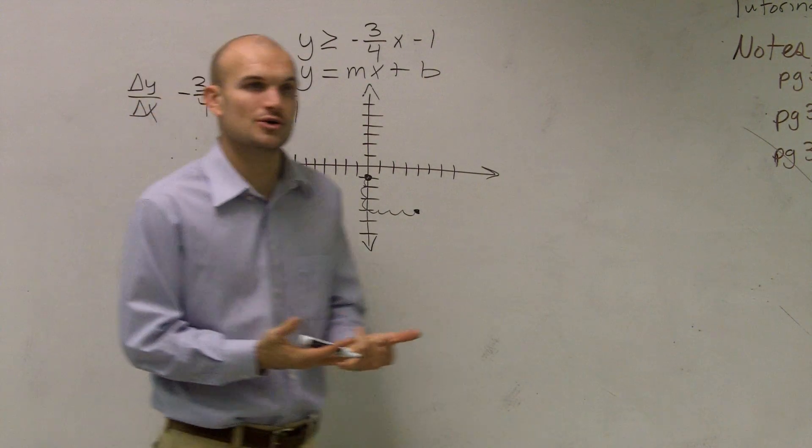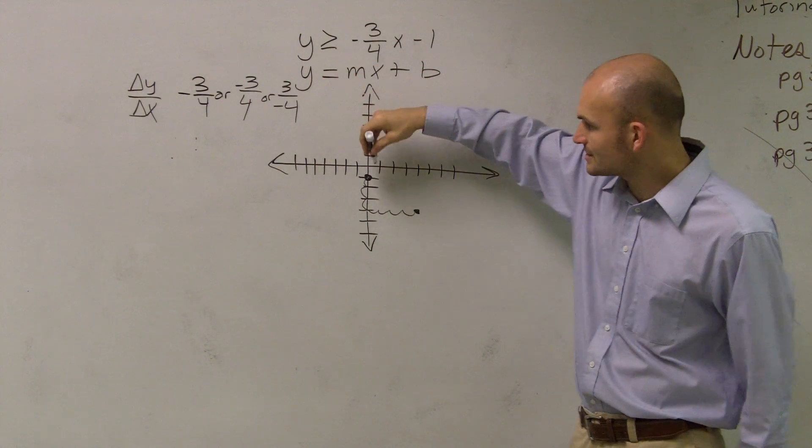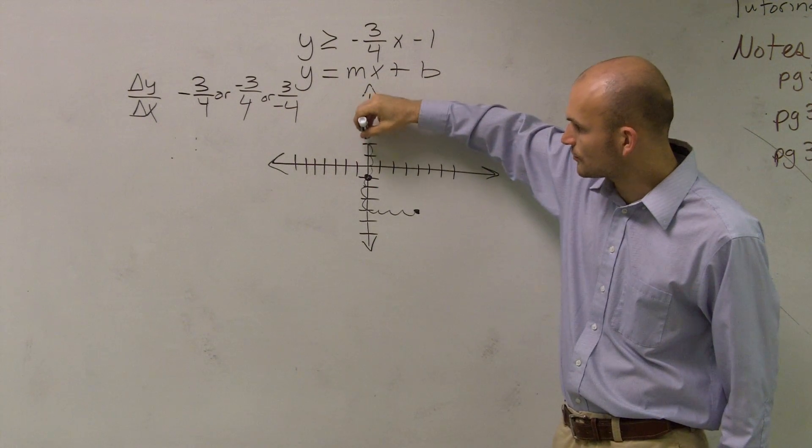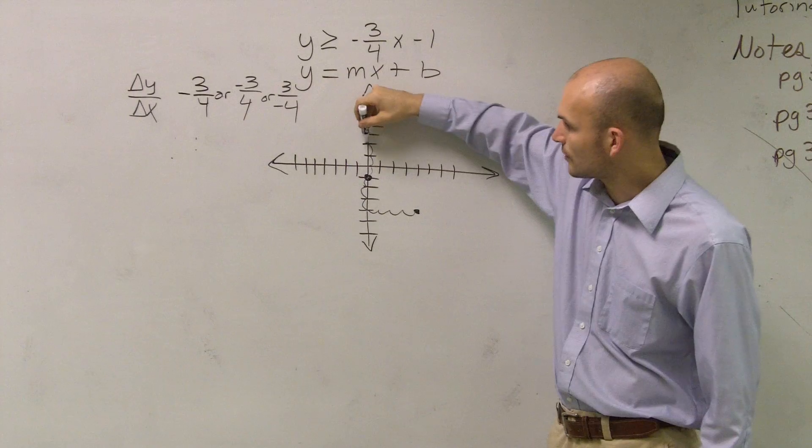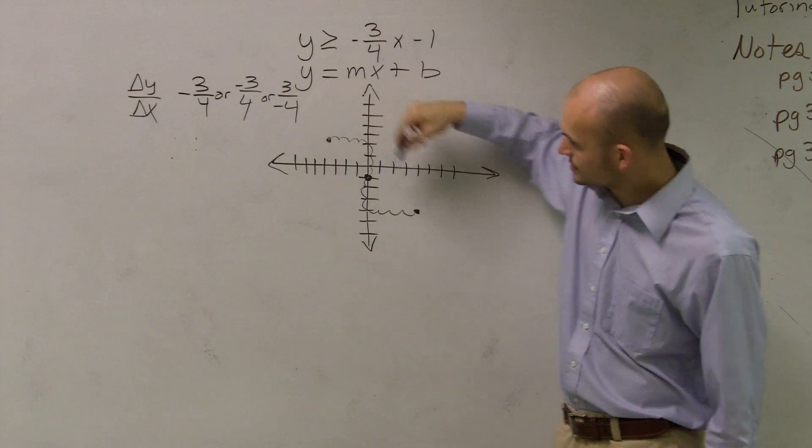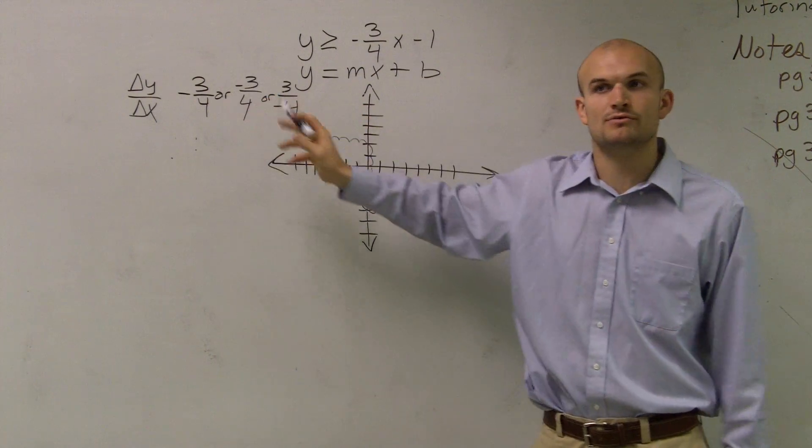However, I just want to show you that if you wanted to do it the other way, that's perfectly fine. If the change in y is 3, that's going to tell you to go up 3. 1, 2, 3. And if the change in the x is negative 4, you go to the left 4. 1, 2, 3, 4. Do you guys notice how these three points are all on the same line? So it doesn't matter which one you use.